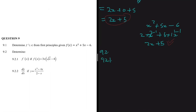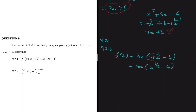Now for problem 9.2.1: determine f prime of x if f(x) = 3x times the square root of x, minus 4. It's easier to write the square root as x to the power of 1/2. So f(x) = 3x times x^(1/2) minus 4, which simplifies to 3x^(3/2) minus 12x. Now we can use the power rule to solve this.